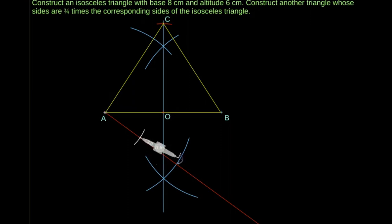The given ratio is 3/4. Here, 4 is greater than 3. So, mark 4 points A1, A2, A3 and A4 on the ray.